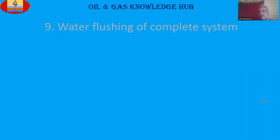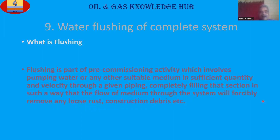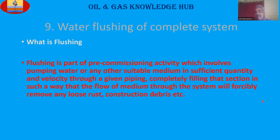Water flushing of a complete system — flushing is part of a pre-commissioning activity which involves pumping water or any other suitable medium in sufficient quantity and velocity through a given piping, completely filling that section, in such a way that the flow of medium through the system will forcibly remove any loose rust, construction debris, etc. When you push water at pressure and velocity through the piping or equipment, whatever is inside should come out — that much force is required.